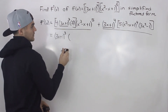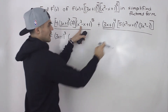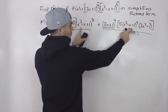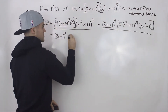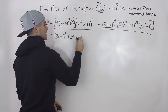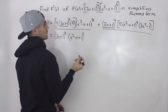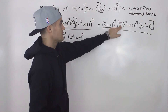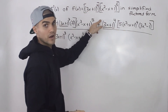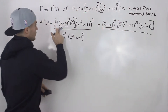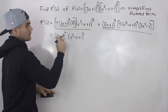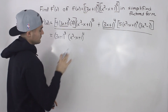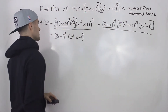What else can we factor out? The bracket x cubed minus x plus 1 appears in both terms — one to the power of 5 and one to the power of 4. So we take out the lowest exponent, which is to the power of 4. For the numerical coefficients, we have 5 and 4 times 3 equals 12. Between 5 and 12, there's nothing in common to factor out, so we have to leave the numbers inside the terms.